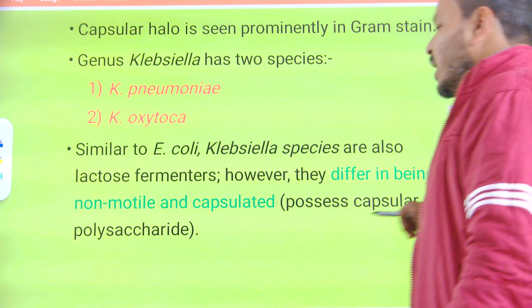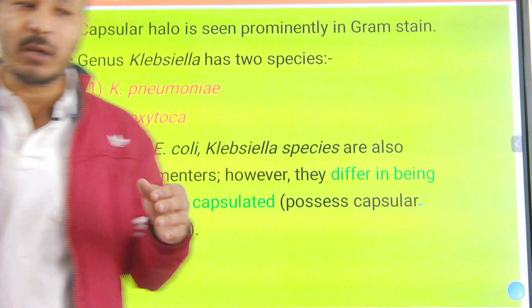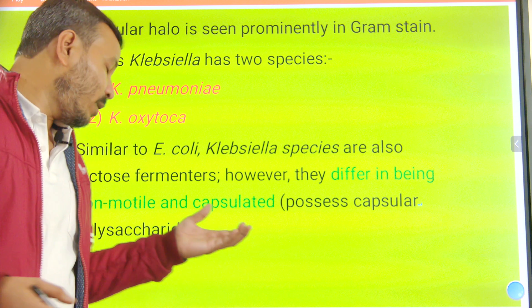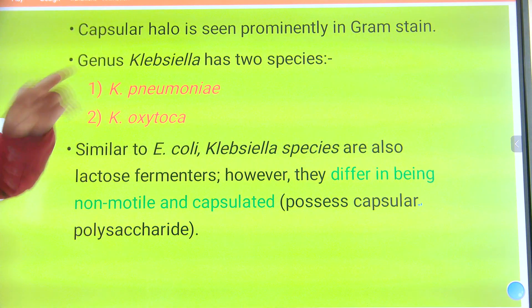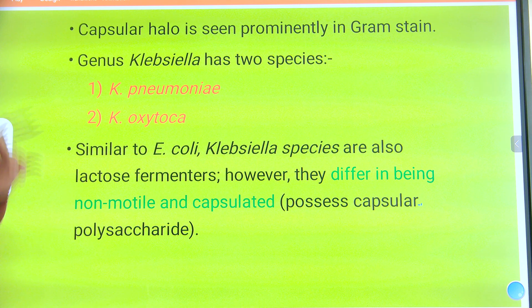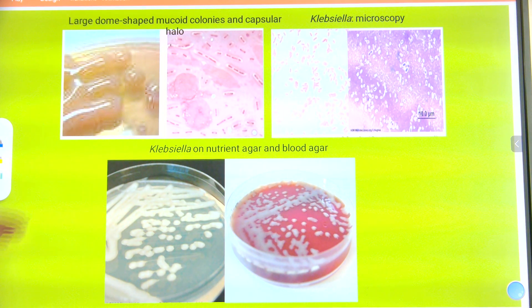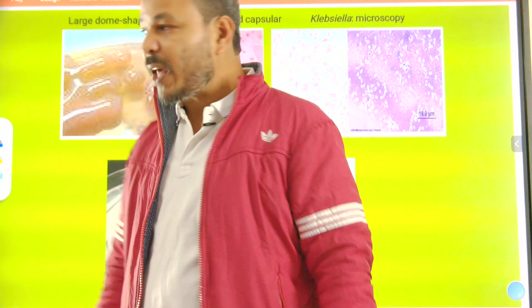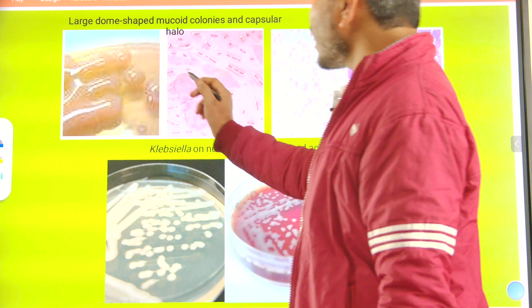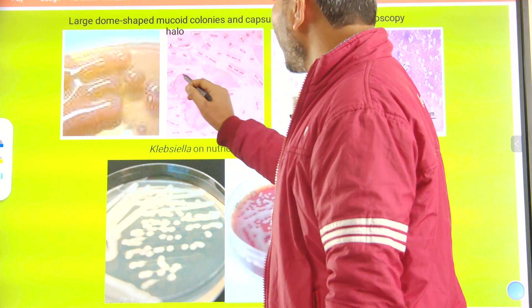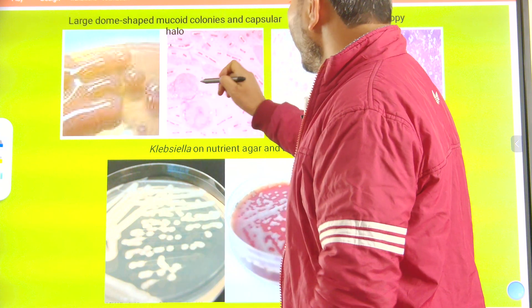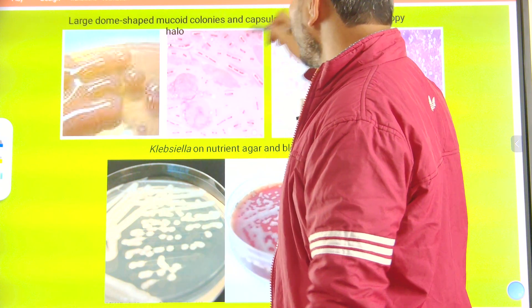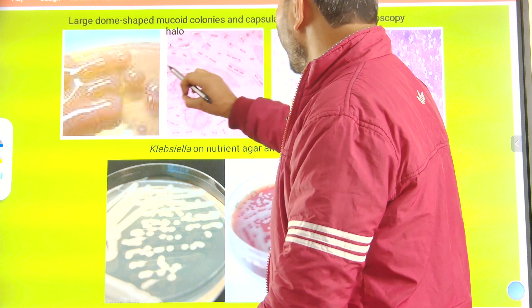Klebsiella possesses a capsular polysaccharide. Compare this to the capsule in Bacillus anthracis, which is made up of protein rather than polysaccharide. When grown on agar plates, Klebsiella forms large dome-shaped mucoid colonies that are sticky. If you touch them with an inoculation loop, a short thread will be present due to the mucoid consistency.